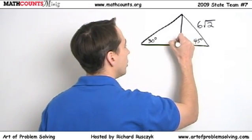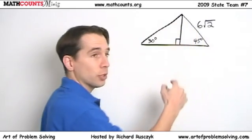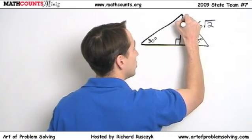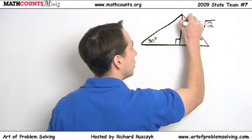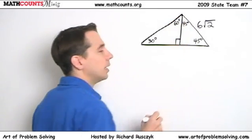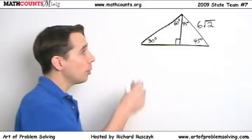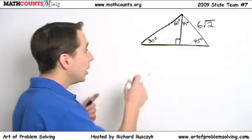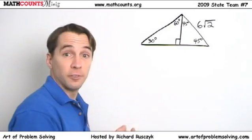We draw an altitude and we break our original triangle into a 45, 45, 90 triangle on one side and a 30, 60, 90 triangle on the other. And now we can use the facts that we know about 45, 45, 90 triangles and about 30, 60, 90 triangles to finish the problem.